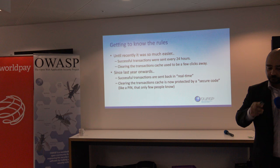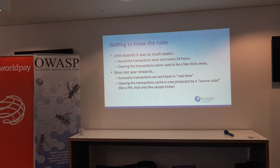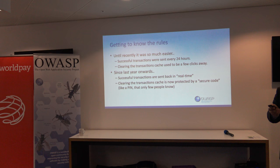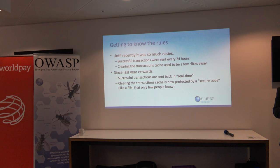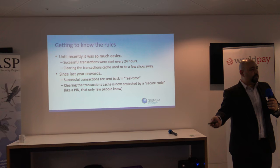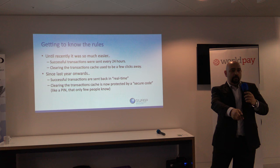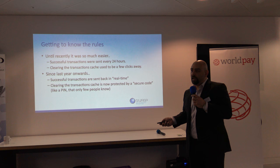Until recently, it was much easier because successful transactions were sent back to the acquirer after 24 hours. Clearing the transaction cache was just a few clicks away — you could make a transaction and clear it from the device so it was never sent back to the acquirer. What micro criminals would do, especially in the US, was go into a shop, buy a really nice huge TV, then go back, remove the POI, and run. That was the crime of the day — micro crime, but it works.